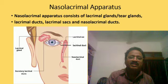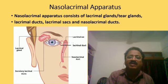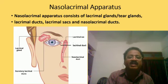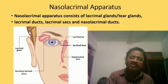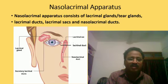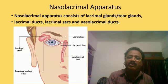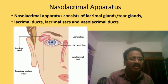The tear secreted by the lacrimal gland, when in excess, is drained out through the lacrimal duct, stored in the lacrimal sac, and the excess tear is then drained out into the nasal chamber through the nasolacrimal duct, as shown in the diagram.